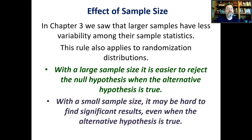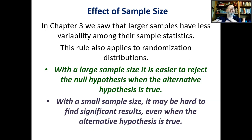Let's talk more about sample size. In Chapter 3, we saw that larger samples have less variability among their sample statistics, and this rule also applies to randomization distributions. With a large sample size, it is easier to reject the null hypothesis when the alternative hypothesis is true — meaning less evidence is needed from the sample itself. Because there's less variability among sample statistics, the standard error is smaller, which means unusual values are much more common.